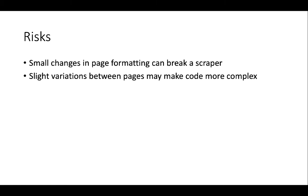You can also run into situations where slight variations between pages make your code much more complex. Consider scraping people's email signature blocks — they tend to have a name, email address, title, and phone number, but the order is different, and they may use different punctuation: commas, dots vs. dashes, or parentheses in phone numbers. If things are entered by hand, even with a consistent intended format, there may be slight variations, and our code needs to accommodate all of those, which can make it much more complex.